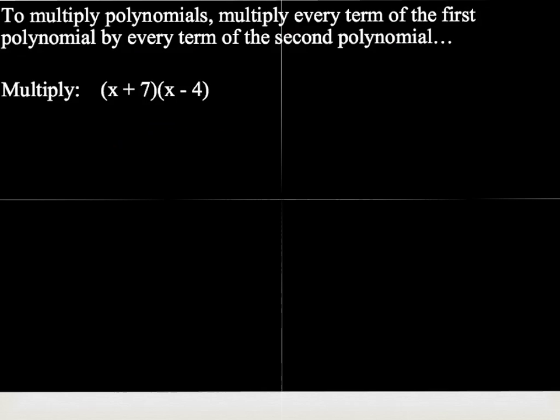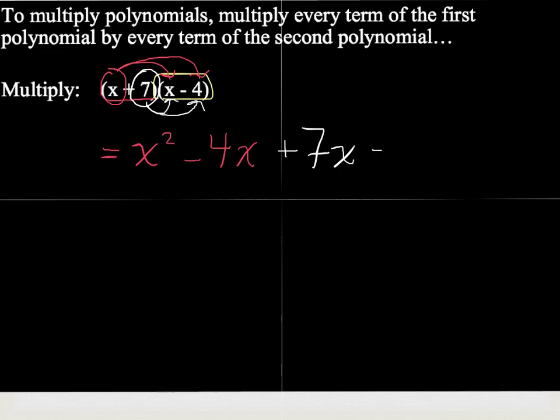Here's our next example. Again, there's only one rule. Multiply every term of the first polynomial by every term of the second polynomial. So we have a first polynomial, x plus 7, and we have a second polynomial, x minus 4. So in my first polynomial, I will multiply x times x, which gives me x squared. Then I will multiply x times negative 4, which gives me minus 4x. Then I will take 7 and multiply it by x, which is plus 7x. And then finally, 7 times negative 4, which gives me negative 28.